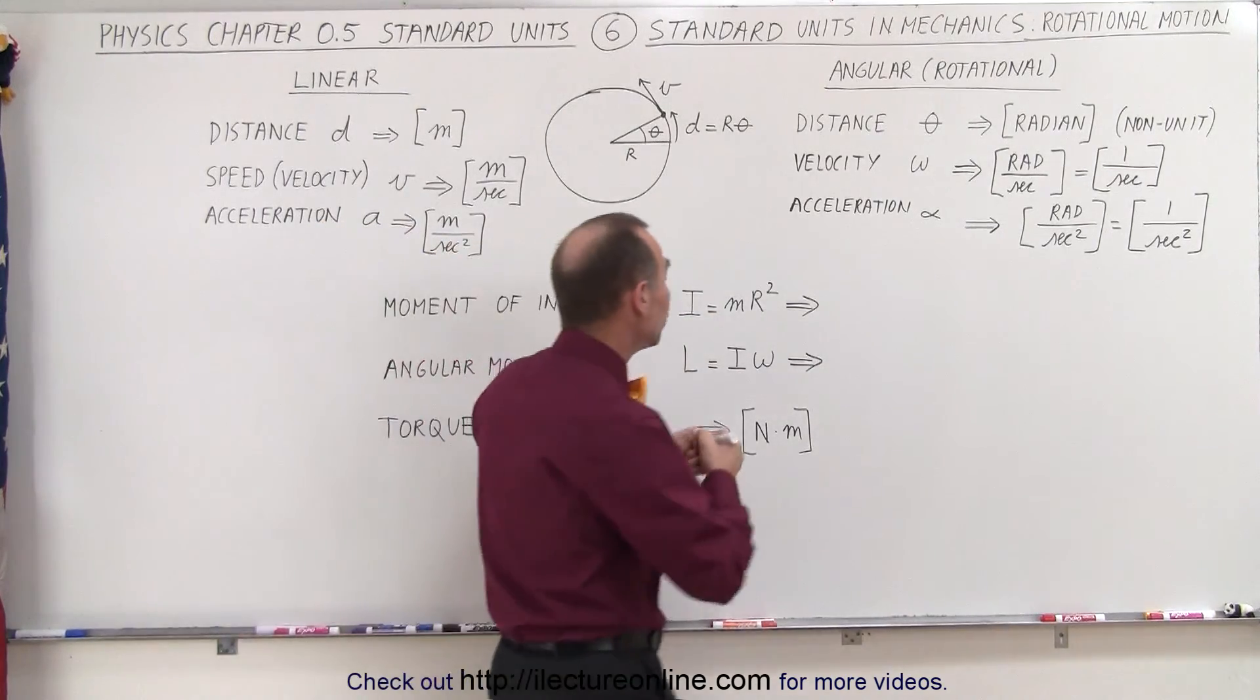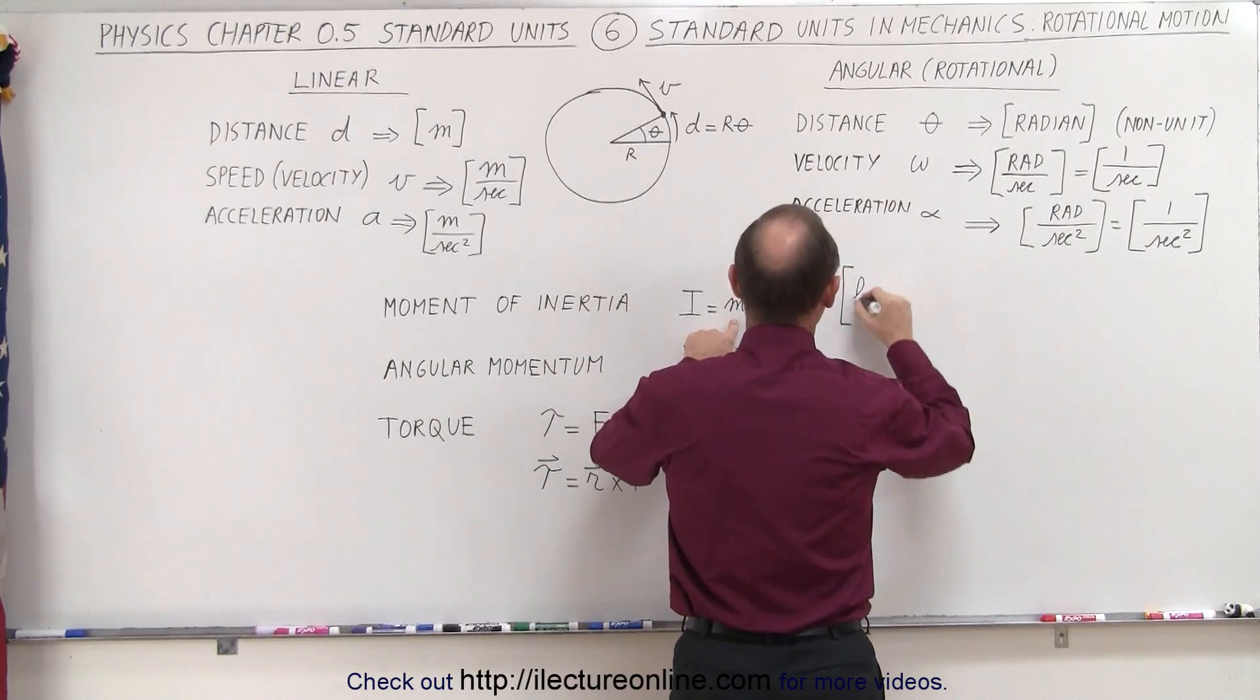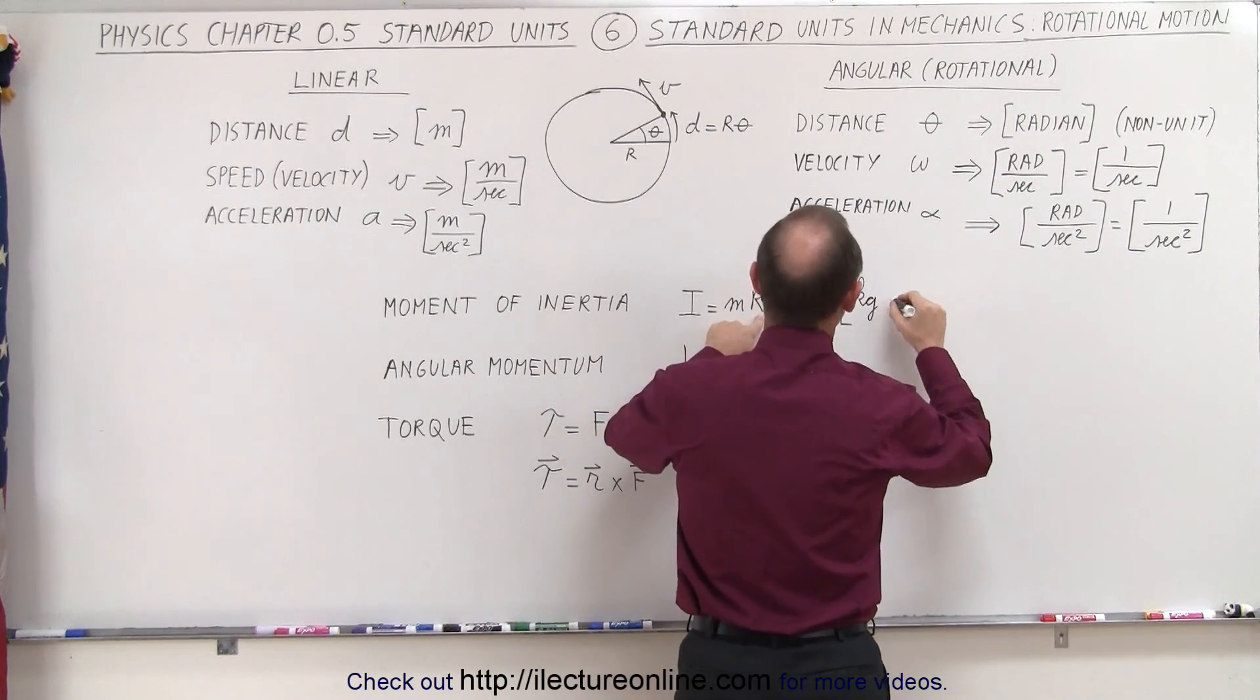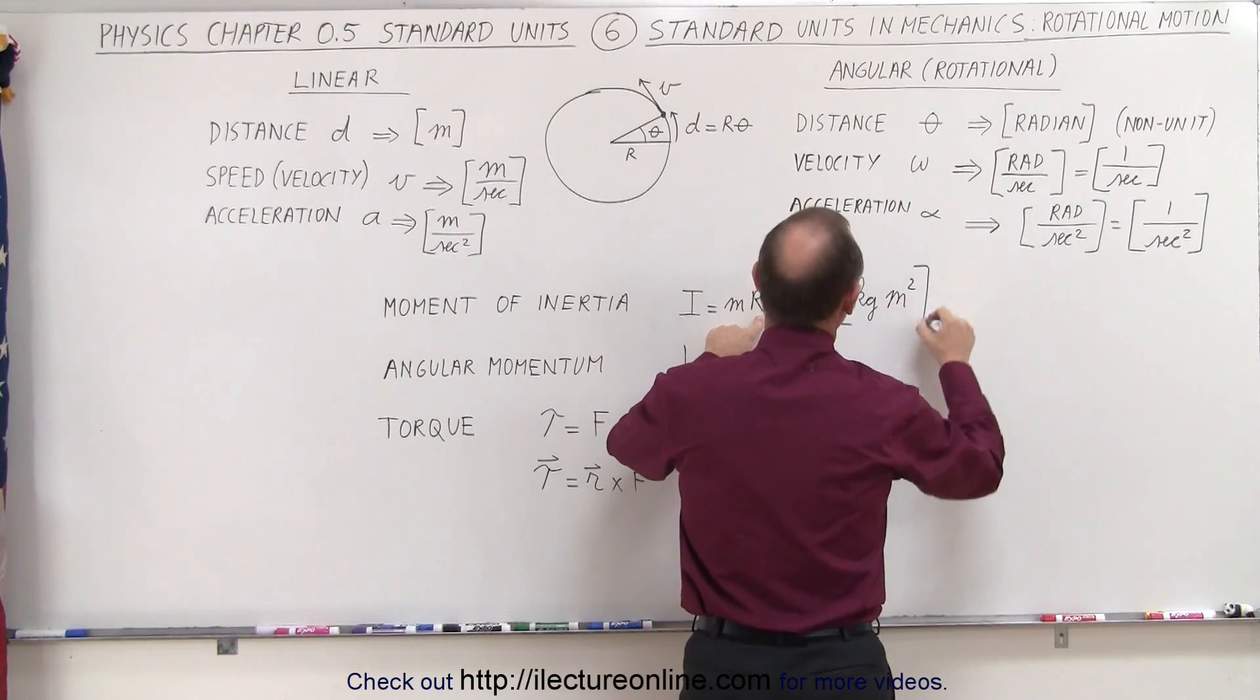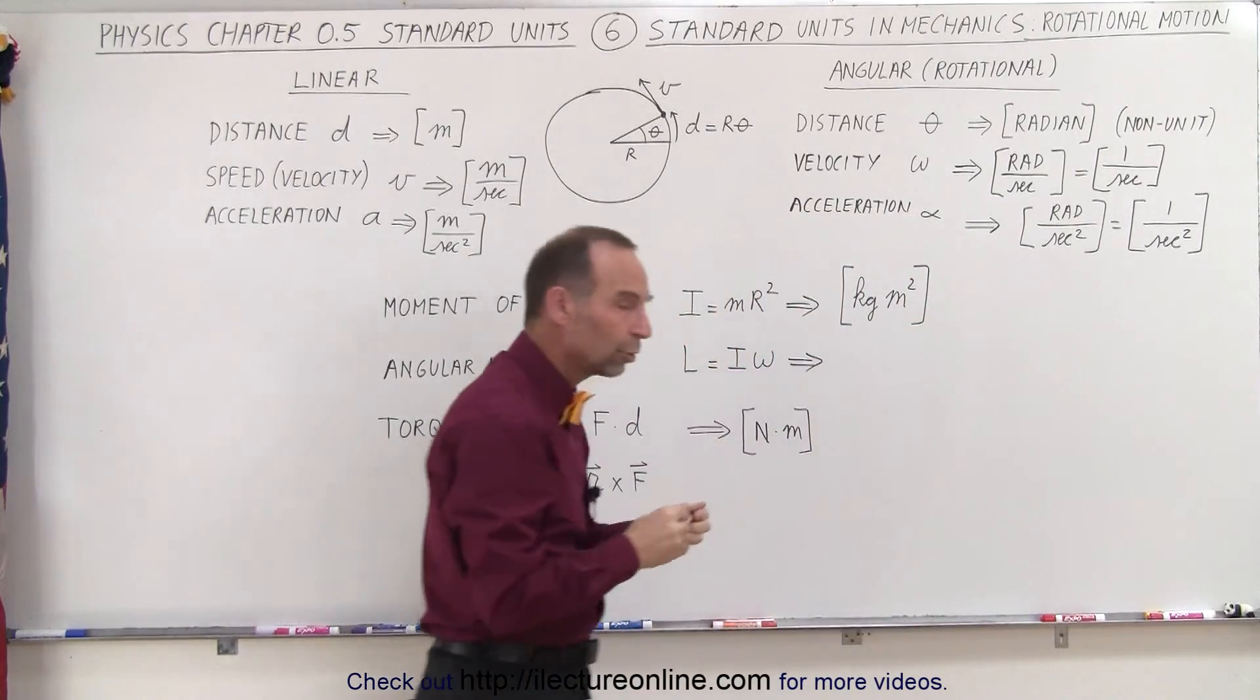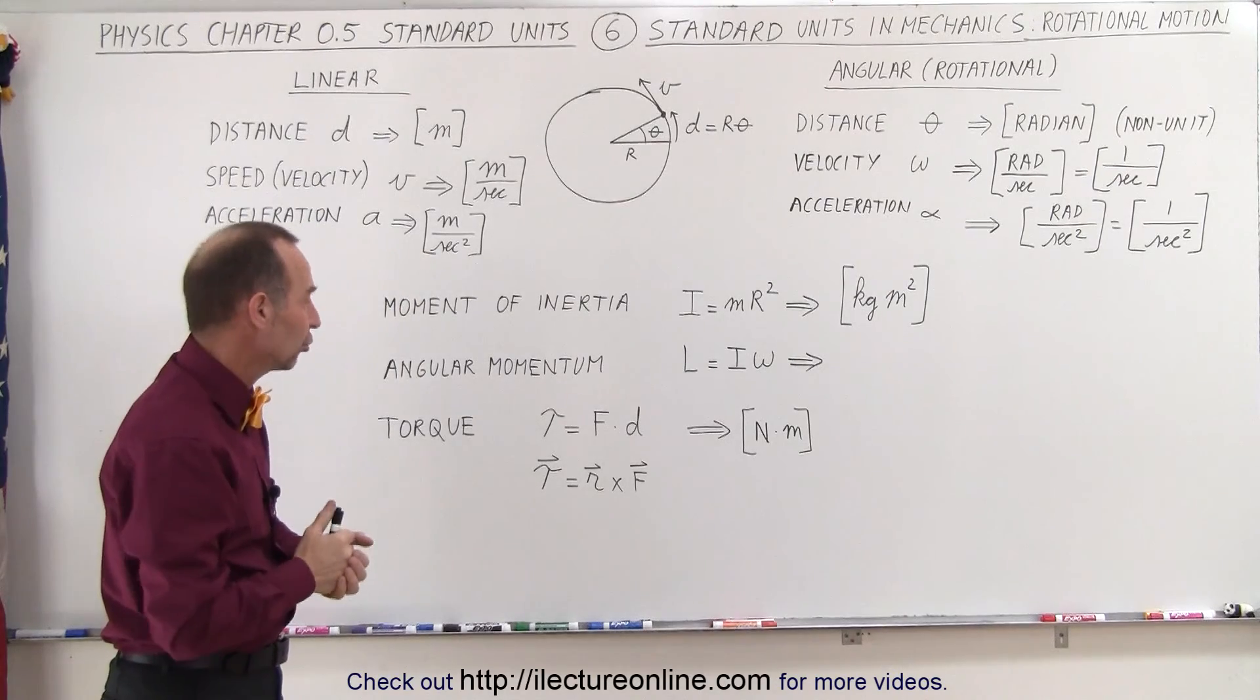But the units we use are indeed the product of mass, which is kilograms, times distance squared, which is meters squared. So these are the rotational equivalent units for mass, kilogram meters squared.